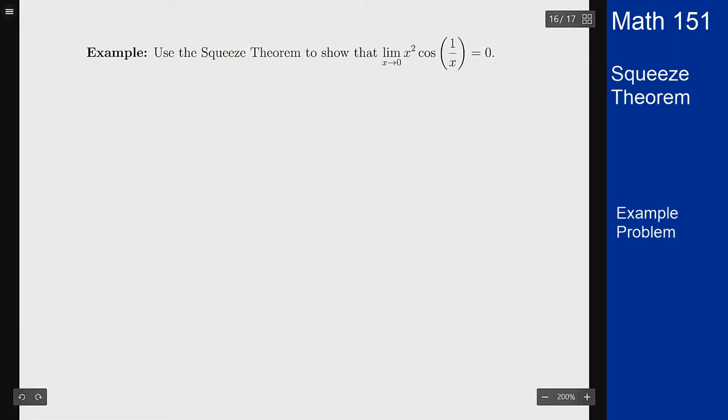The first thing to think about is why would I want or need to use the squeeze theorem on this problem? Well, the main reason is my limit has two parts. I have one part here that goes to 0, this x squared will go to 0 as x goes to 0, and I have a second part here where the limit does not exist.